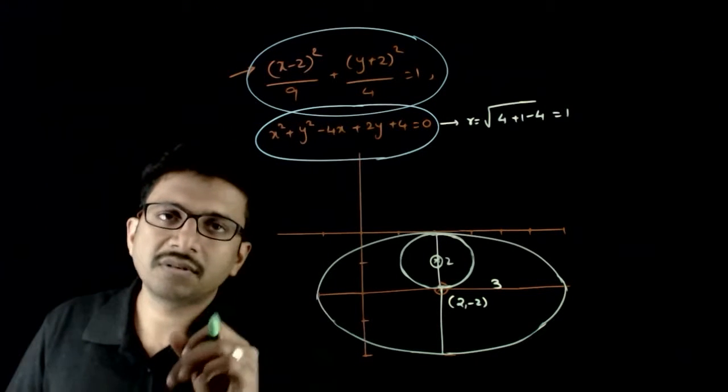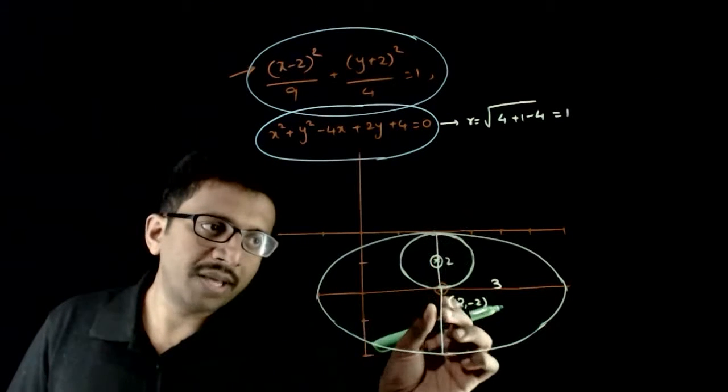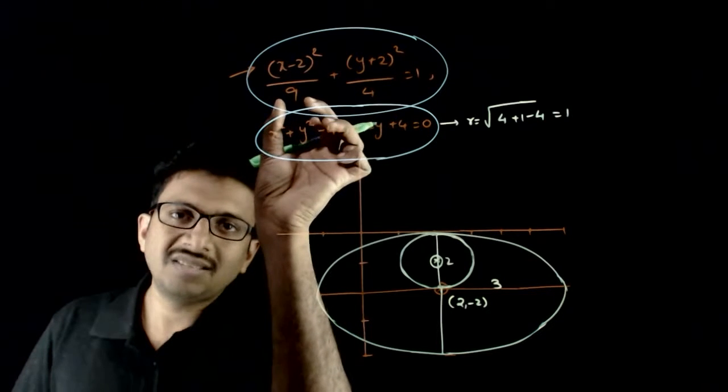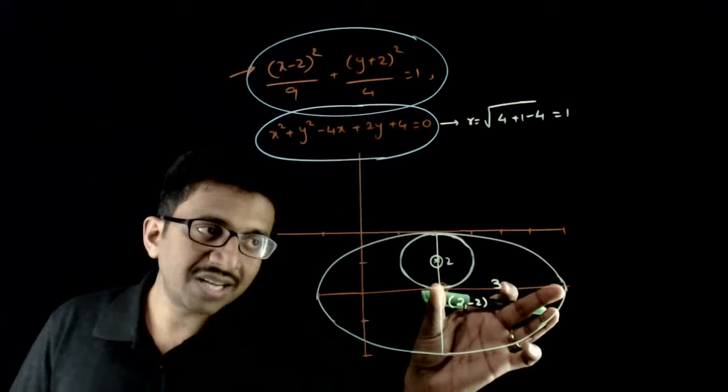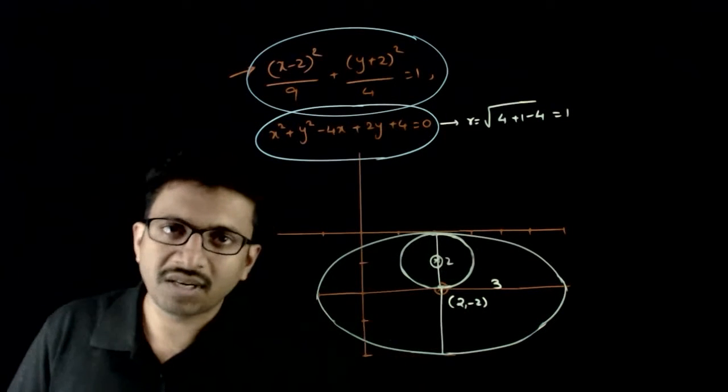For the ellipse, the center is (2, -2), the major axis is 6 and the minor axis is 4. That is, the semi-major axis is 3. It extends 3 units in the horizontal direction and 2 units in the vertical direction.